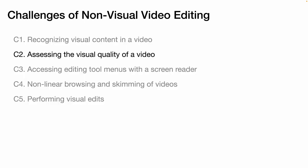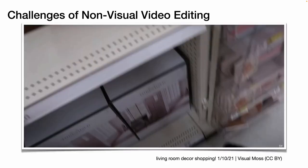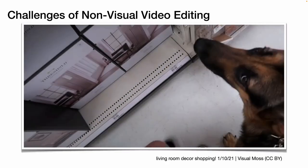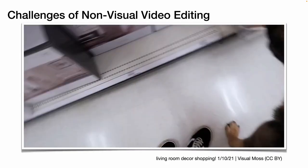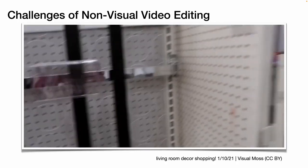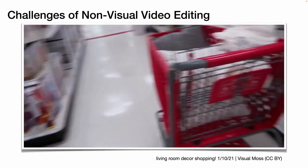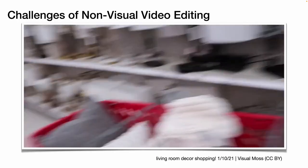Second, it is hard to assess the quality of the video. The lighting can be too bright or too dark, or the footage might be blurry. Here, the camera is shaking a lot, but it is hard to notice these errors.